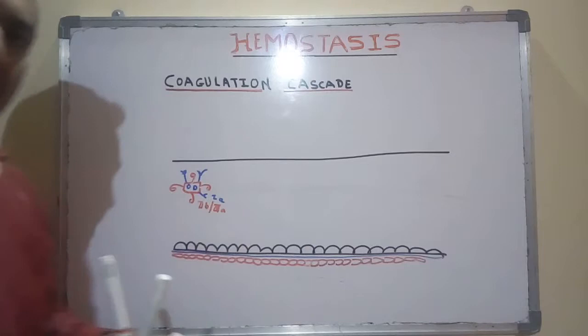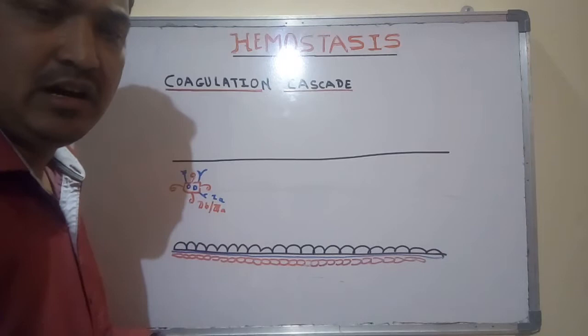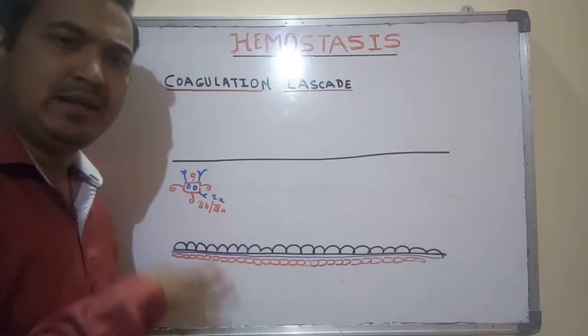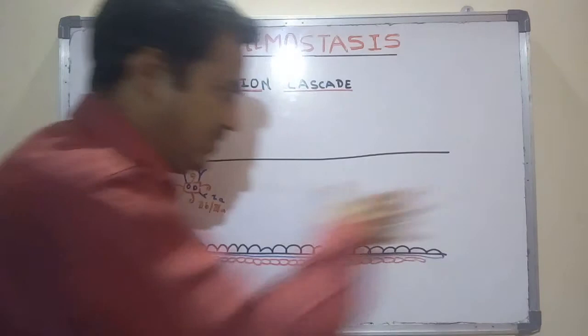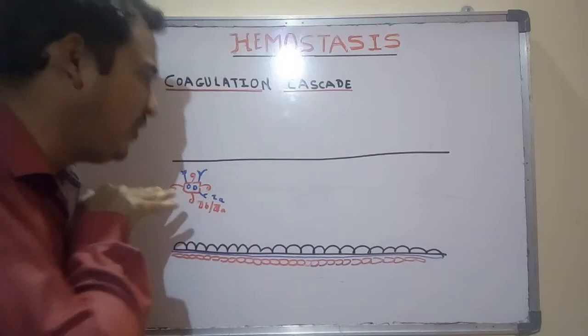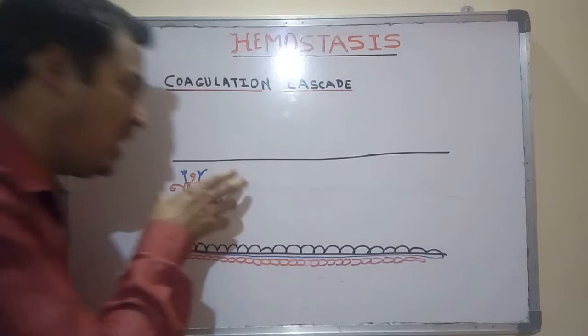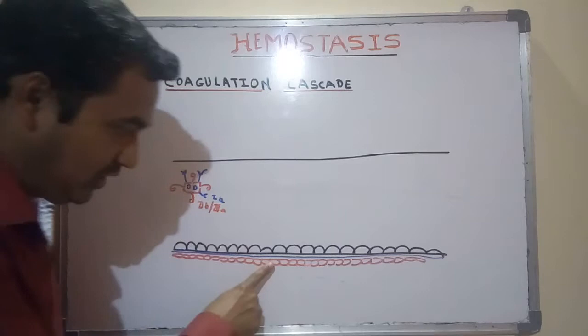There are receptors on platelets: 2b/3a receptors and 1a receptors. So 1a, 2b, and 3a are the names of the receptors present around the platelet. The platelet has granules — the oval ones are alpha granules, and the D-shaped ones are delta granules, like a sac. These platelets are circulating; they are 2 to 3 micrometers in diameter — very small compared to RBCs. They are flowing inside the intravascular compartment.